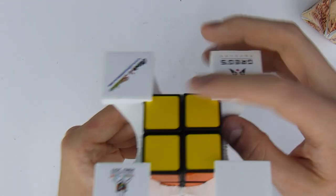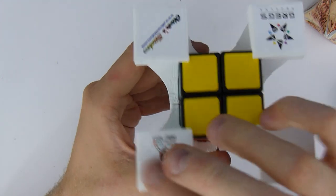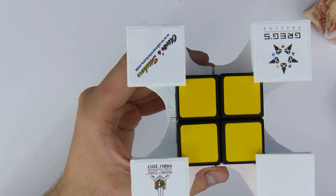And here we go. The solved Eiffel Tower. With our beautiful logos. The Greg's Puzzles logo. Oliver Stickers. And the Rubik's Paris 2017 World Championship.